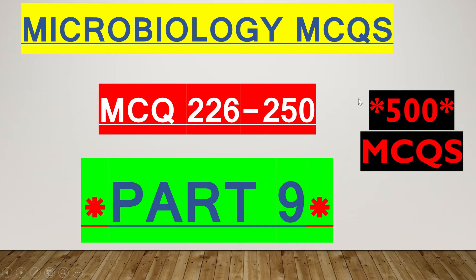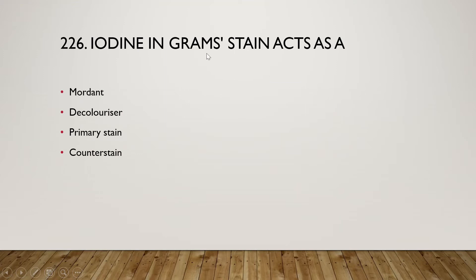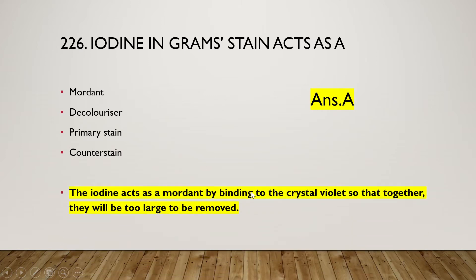The first question: iodine in gram stain acts as a mordant, decolorizer, primary stain, or counterstain? The right answer is option A — mordant. Iodine acts as a mordant by binding to crystal violet, the primary stain, so that together they are too large to be removed by the decolorizer. Mordant iodine binds with crystal violet to stay tightly packed within gram-positive bacteria so they cannot be removed by decolorizer treatment.